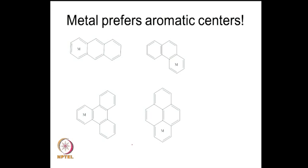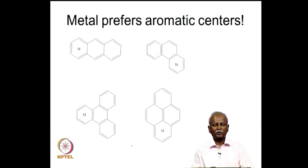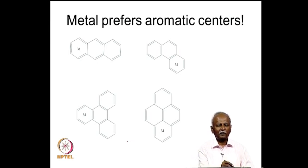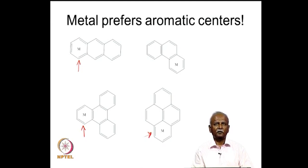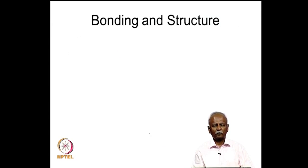A variety of aromatic ring systems can be used - in fact, annulated ring systems were very commonly used for these metal vapor co-condensation techniques. When there is a choice, the metal tends to prefer an aromatic ring rather than a ring system which has only partial aromaticity. Here are a series of ring systems where the aromaticity is more complete in the terminal rings, and that is where the metal ends up. You can see that the metal prefers rings which have greater aromaticity than the middle ring which has lesser aromaticity. This brings us to the end of the synthetic section, and now let us talk about the bonding and structure in these molecules.